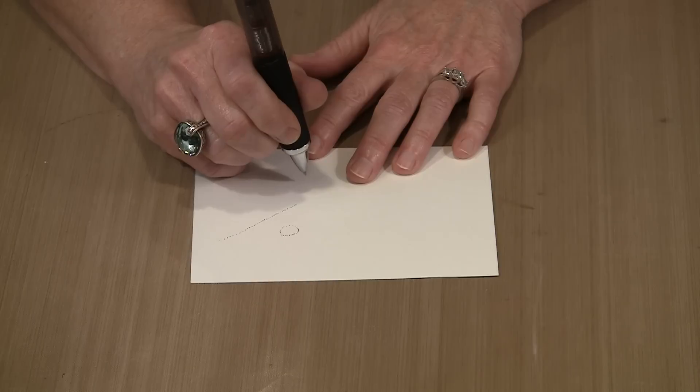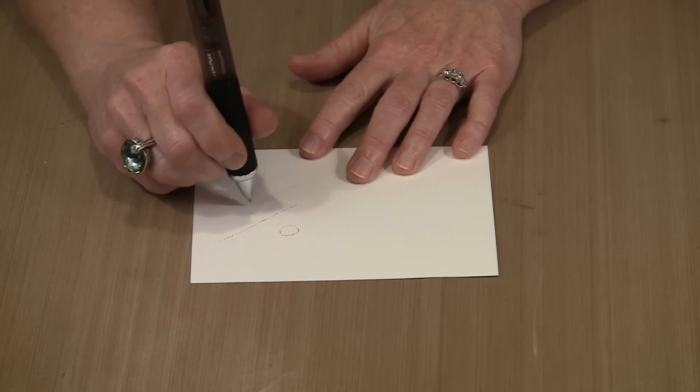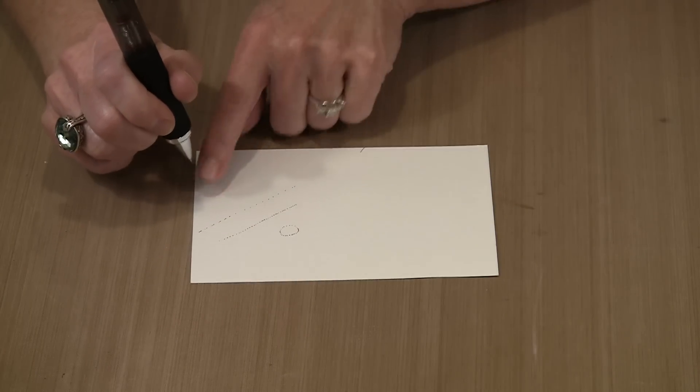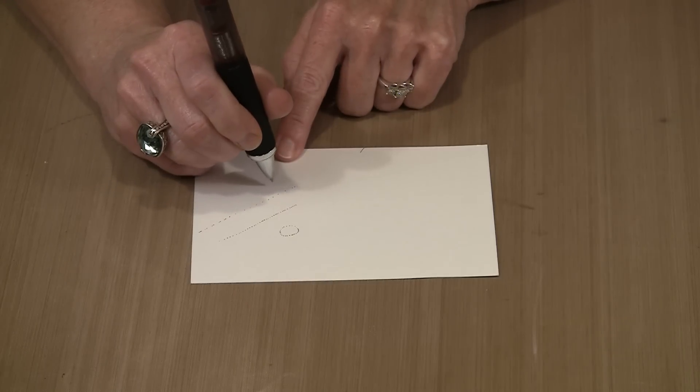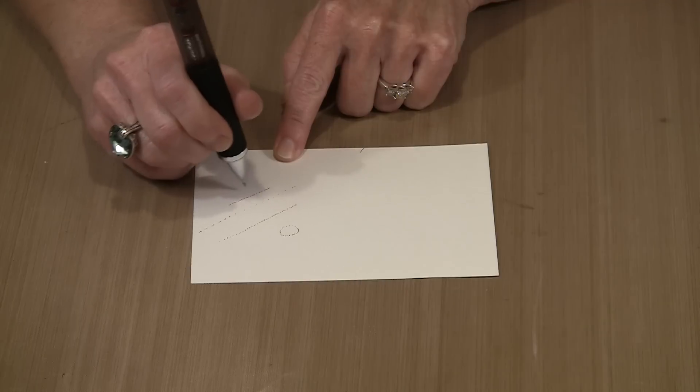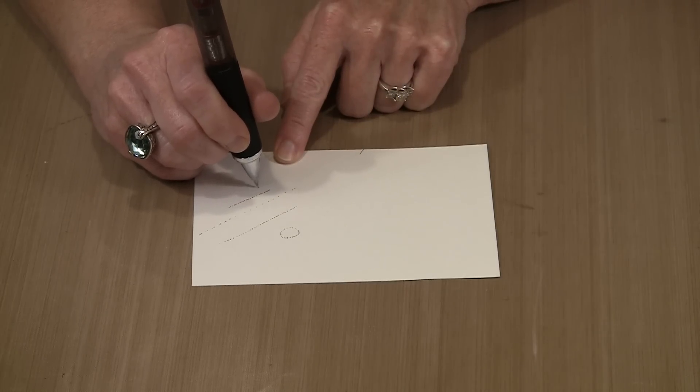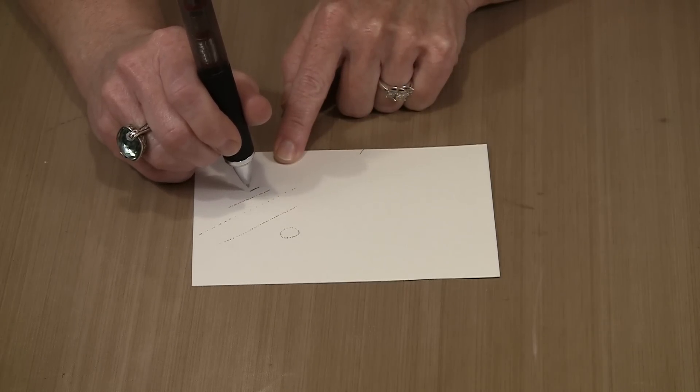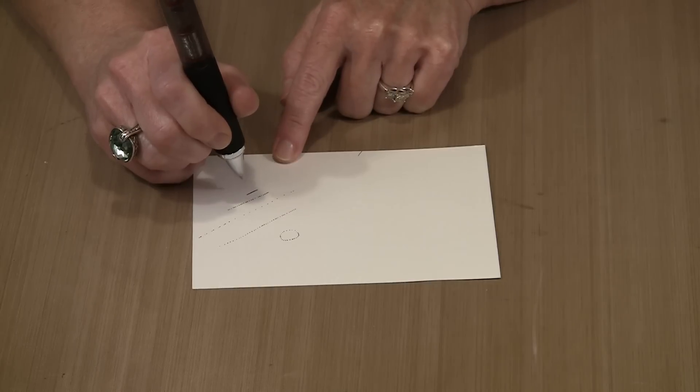Now let's watch what happens when I move my hand more quickly. See how further apart these dots are as opposed to if I go slowly. In fact if I go slow enough I could almost make a solid line.